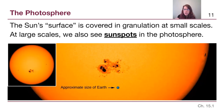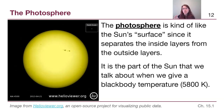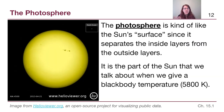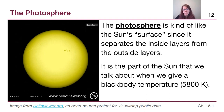At small scales we see granulation, and at large scales the photosphere is known for sunspots. Sunspots are often roughly the size of Earth. In the previous picture, the approximate size of Earth relative to a sunspot group is highlighted in the textbook. Another image from Helio Viewer — an open-source website for visualizing public solar data — shows Earth in the upper right to scale next to a larger sunspot group.